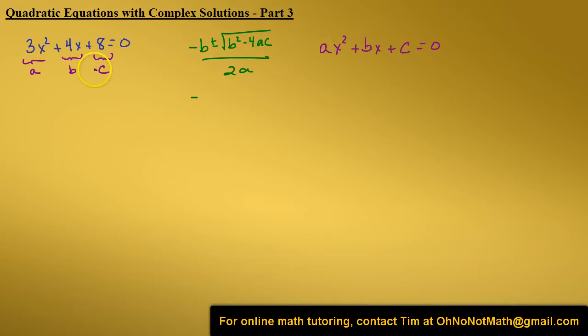We have B is 4 so we have negative 4 plus or minus the square root of B squared, 4 squared is 16 minus 4 times A is 3 and C is 8 all over 2 times 3 which is 6. Let's continue to simplify we have 16 minus 8 times 3 times 4 is 96 all over 6.